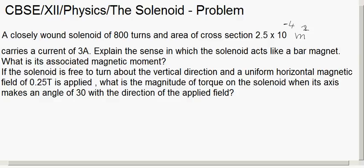So let us read it. A closely wound solenoid of 800 turns and area of cross section 2.5 into 10 to the power minus 4 meter square carries a current of 3 ampere. Explain the sense in which the solenoid acts like a bar magnet and what is its associated magnetic moment. If the solenoid is free to turn about the vertical direction and a uniform horizontal magnetic field of 0.25 tesla is applied, what is the magnitude of torque on the solenoid when its axis makes an angle of 30 degrees with the direction of the applied field?